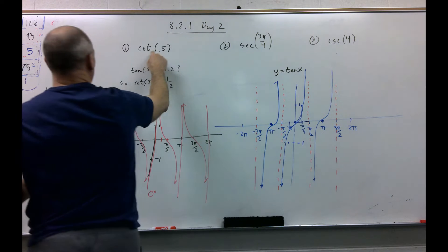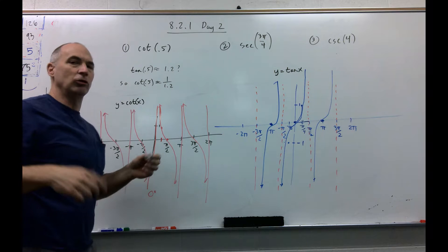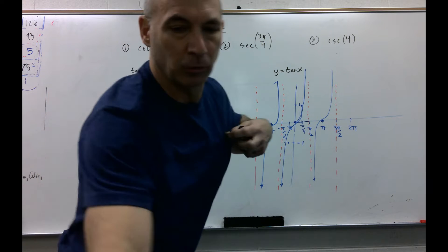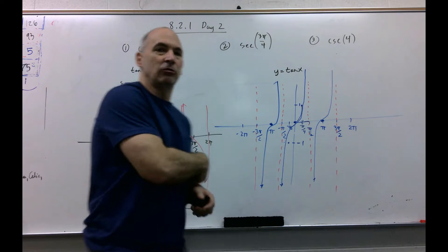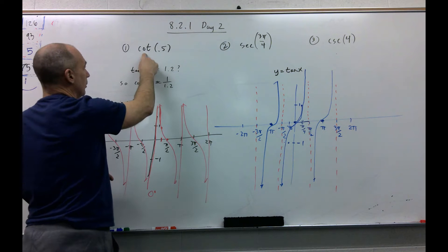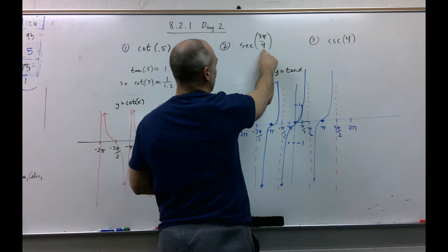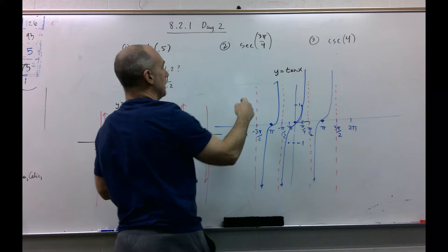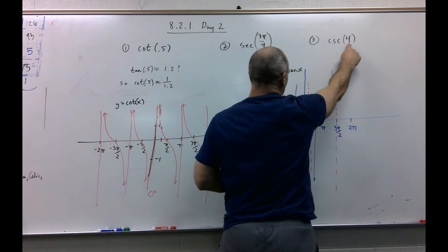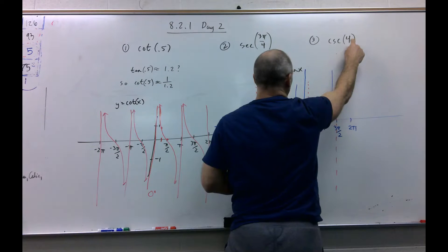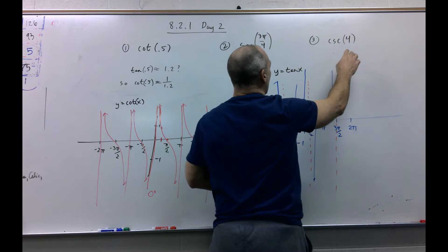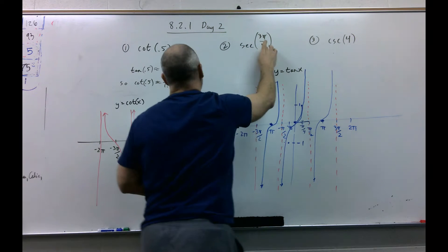Here's cotangent of 0.5. Now, what you guys are used to is you're used to degrees. This is clearly radians. This is not clearly radians. What is that? Four degrees, four radians. Just so you know, this is radians, radians, radians.